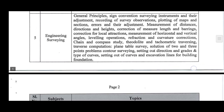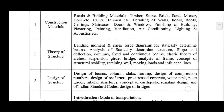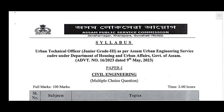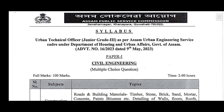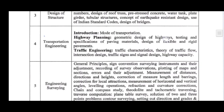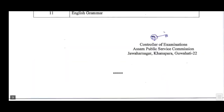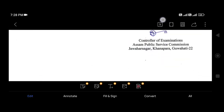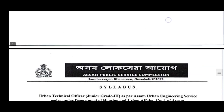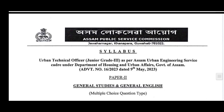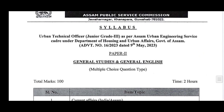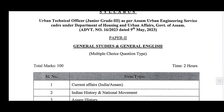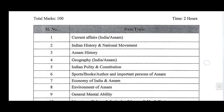So here today, please check out the official website: APAC.nic.in, where you can find the Urban Technical Officer, Junior Grade 3 post details. Please check out Paper 1 — Civil Engineering. There is also a Paper 2, which covers general studies and general English.